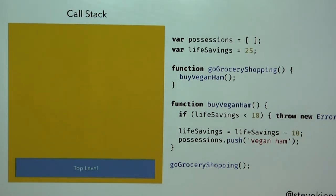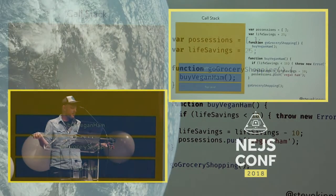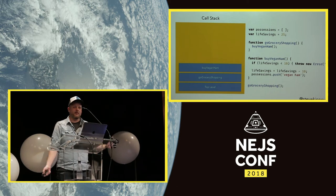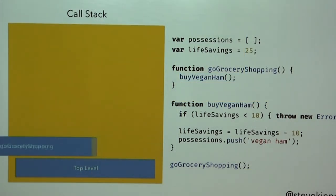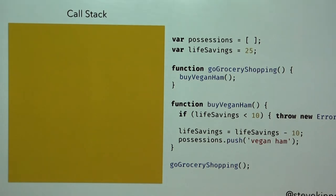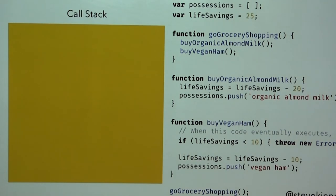We start the program at the top level, execute go-grocery-shopping, which immediately calls buy-vegan-ham. We run through it, decrement life savings, push vegan ham into possessions, and that finishes the function, which brings us to the end of grocery shopping. Now let's change the code — I'm also going to buy some organic almond milk, which costs 20 of whatever unit. That's going to cause a problem when I try to buy the vegan ham because I won't have enough life savings anymore.